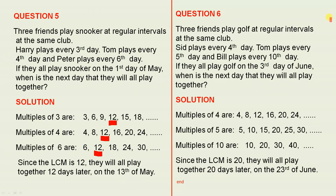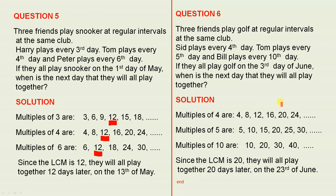Question 6: three friends play golf at regular intervals at the same club. Sid plays every fourth day, Tom plays every fifth day and Bill plays every tenth day. If they all play golf on the third day of June, when is the next day that they will all play together? Here are the multiples of 4 because of the fourth day, the multiples of 5 because of the fifth day, and the multiples of 10 because of the tenth day.